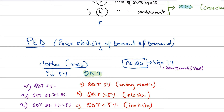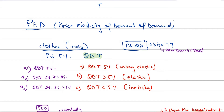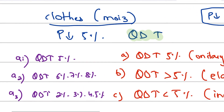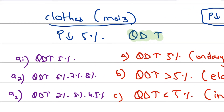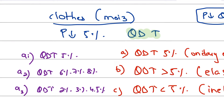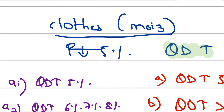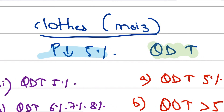Before I move on to the definition, let's suppose you have a clothes business. There is a student, Mr. Moise, who owns a clothes business. Mr. Moise decides that he is going to reduce the price of clothes by 5%. If he decides to reduce the price of clothes by 5%, what will happen to quantity demanded?